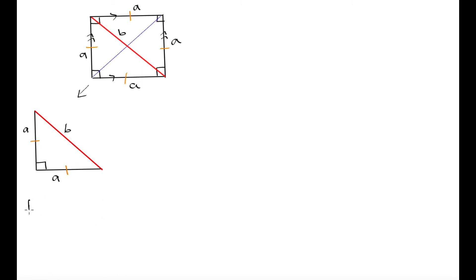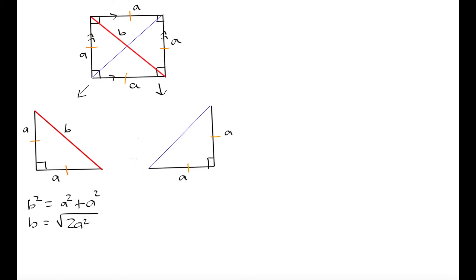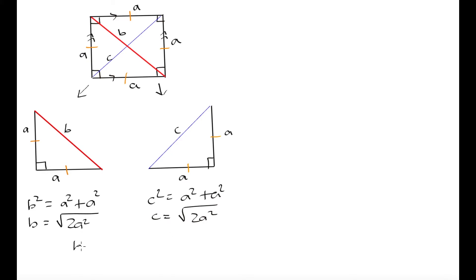Using Pythagoras, b squared equals a squared plus a squared, so b equals the square root of 2a squared. Now we do the same for the triangle with the blue diagonal as the hypotenuse, which we label c. So c squared equals a squared plus a squared, meaning c equals the square root of 2a squared. Since b and c both equal the square root of 2a squared, b equals c — the diagonals are the same length.